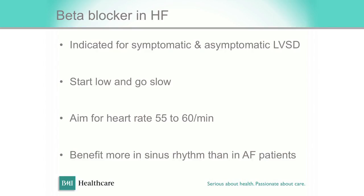How do beta blockers work? They improve both symptoms and prognosis. You always start with the lowest possible dosage and uptitrate slowly, because there is a reason for that. You don't aim for the maximum dose — you aim for a heart rate of 55 to 60, because there is a lot of individual variation. Once you reach that, even if it is at 1.25 mg, that is good enough.